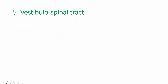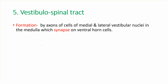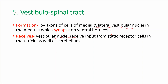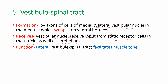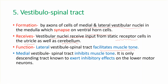The vestibulospinal tract is formed by cells of the medial and lateral vestibular nuclei in the medulla, synapsing on the ventral horn cells. The vestibular nucleus receives input from the static receptor cells in the utricle of the inner ear, as well as from the cerebellum. The lateral vestibulospinal tract facilitates muscle tone, whereas the medial vestibulospinal tract inhibits muscle tone — it is the only descending tract that exerts inhibitory effects on the lower motor neuron.